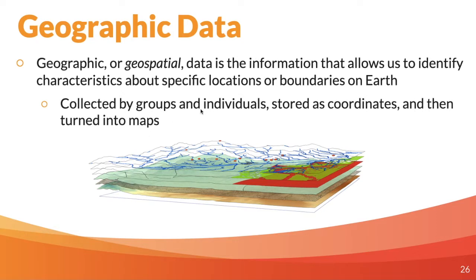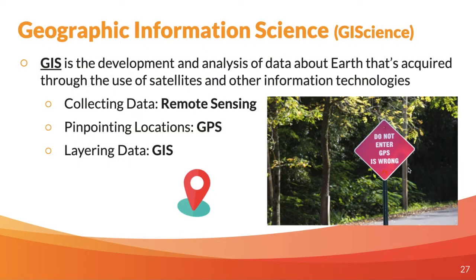All this data is collected by groups and individuals. It's stored as coordinates — specific data, coordinates like we were talking about in section one — and then we turn that data into usable maps. Geographic information science is the whole science process through which we actually get all of this usable data and maps. It's the development and analysis of data about Earth acquired through the use of satellites and information technologies. We collect data using remote sensing, pinpoint locations using GPS, and layer data using geographic information systems.